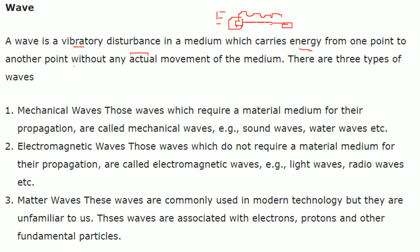There are three types of waves: mechanical wave, electromagnetic wave, and matter wave. Mechanical waves follow Newton's laws of mechanics and motion, and they require a material medium for their propagation — like sound waves and water waves. Electromagnetic waves, or EM waves, are produced because of electromagnetic phenomena and do not require any material medium for propagation — like light waves and radio waves.